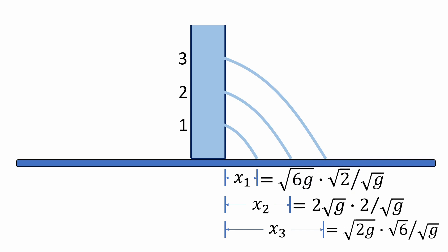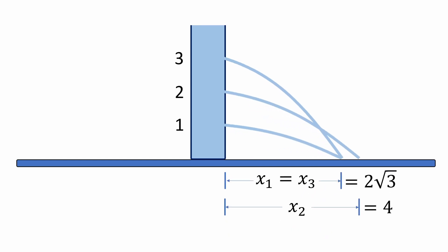And these expressions simplify even further to the following exact distances for x1, x2, and x3. We're almost done. We just need to draw these distances to scale and match them to their corresponding holes. So we can now see that the water jets from holes 1 and 3 will land 2 times the square root of 3 feet from the container, which is about 3 and a half feet. And the water jet from hole 2 lands exactly 4 feet away. So it's container A.